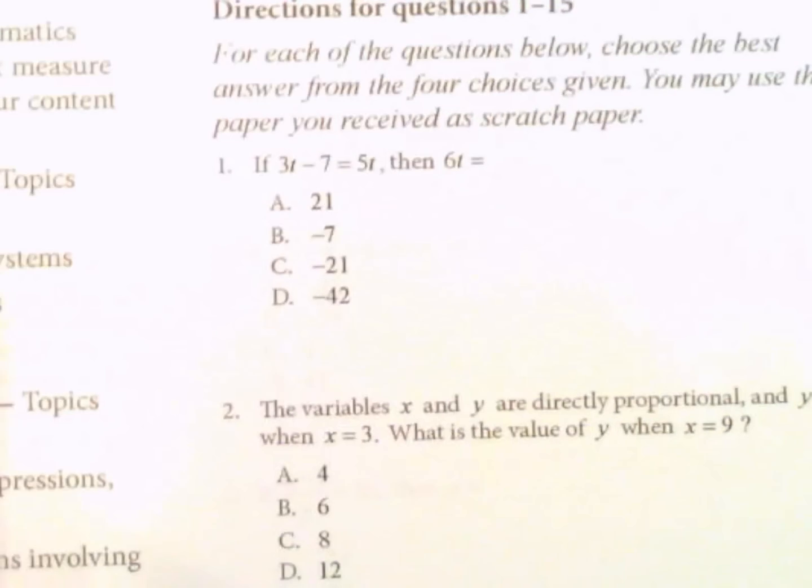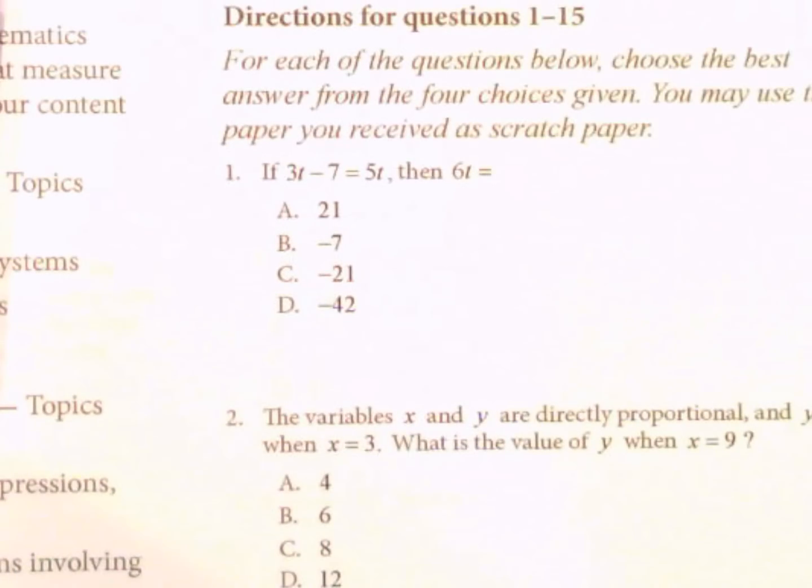So if 3t minus 7 equals 5t, then 6t equals. Okay, so what we need to do here is simplify this equation. Let's get all the t's together.